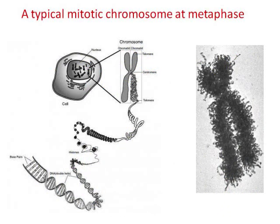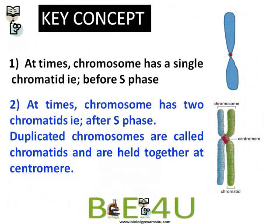First of all, what is a chromosome? We are made up of billions of cells, and each cell has a nucleus. Inside the nucleus, DNA resides. This DNA is very long — if we stretch it out, it would be approximately three meters long. DNA is packaged into thread-like structures called chromosomes. Chromosomes are not visible under the microscope except at the time of cell division, when the DNA is most condensed.